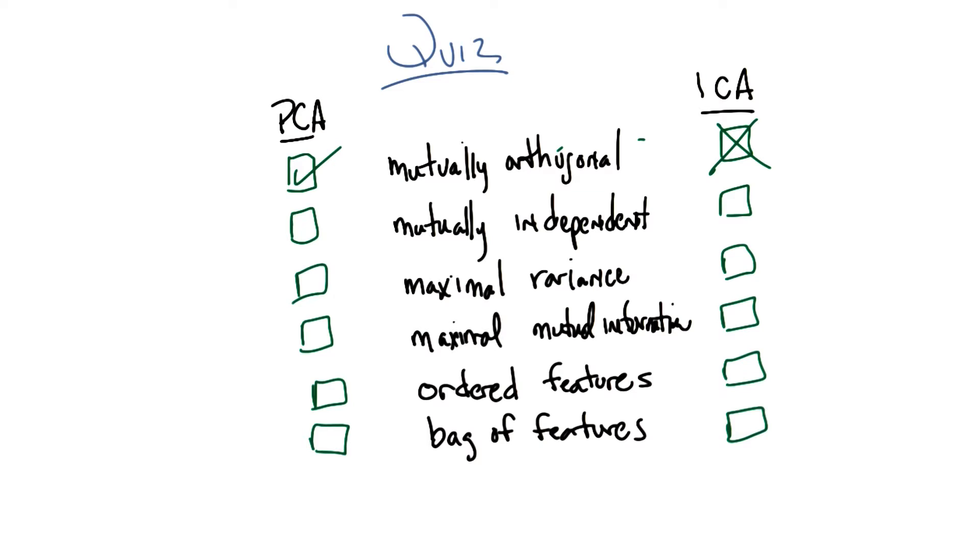Okay. I'm going to put an x there to represent unchecked. Okay, got it? Yeah. Okay. What about mutually independent? So that was how ICA was trying to construct its, I don't want to say features. Yeah, I guess the transformed features.